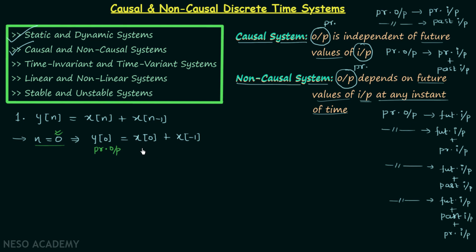Here x[0] is the present input, and x[-1] is the past input because compared to n = 0, n = -1 is a past value. It is clear that the present output is depending on the present input and also on the past input, and there is no future value of input on which the present output is depending. Therefore this system is a causal system.